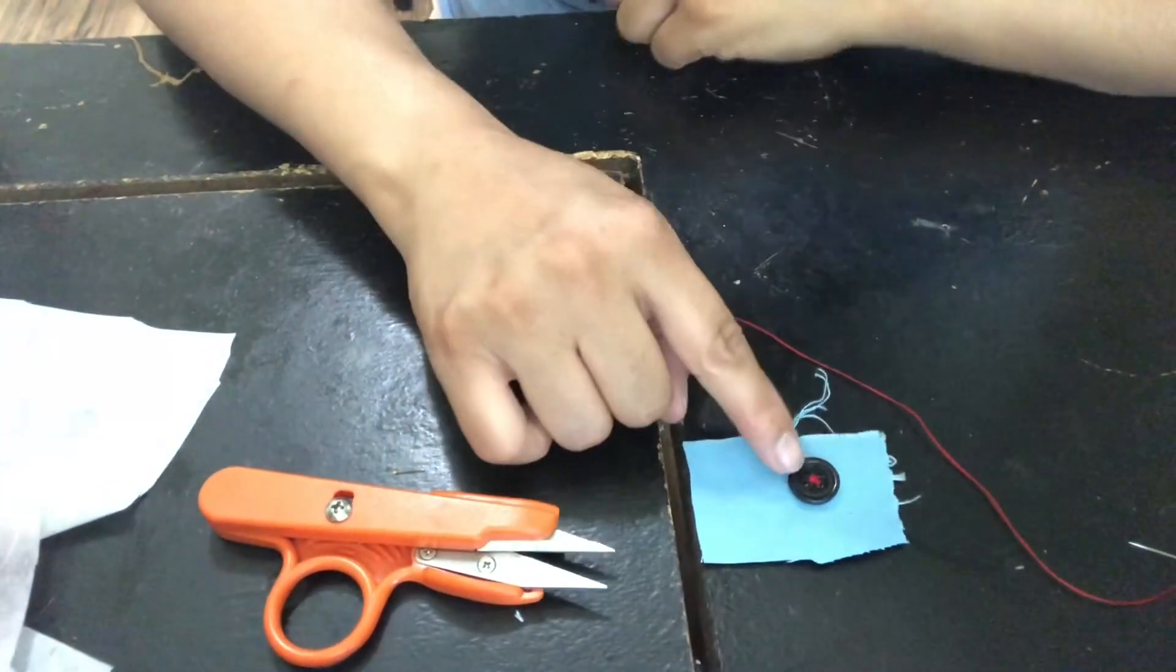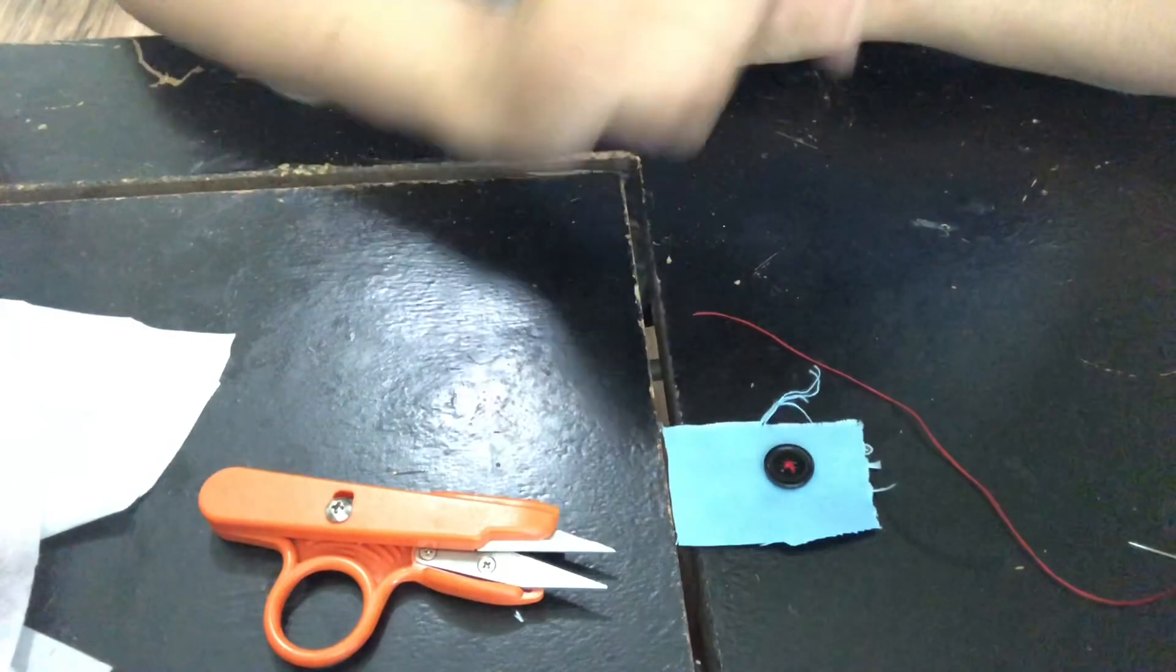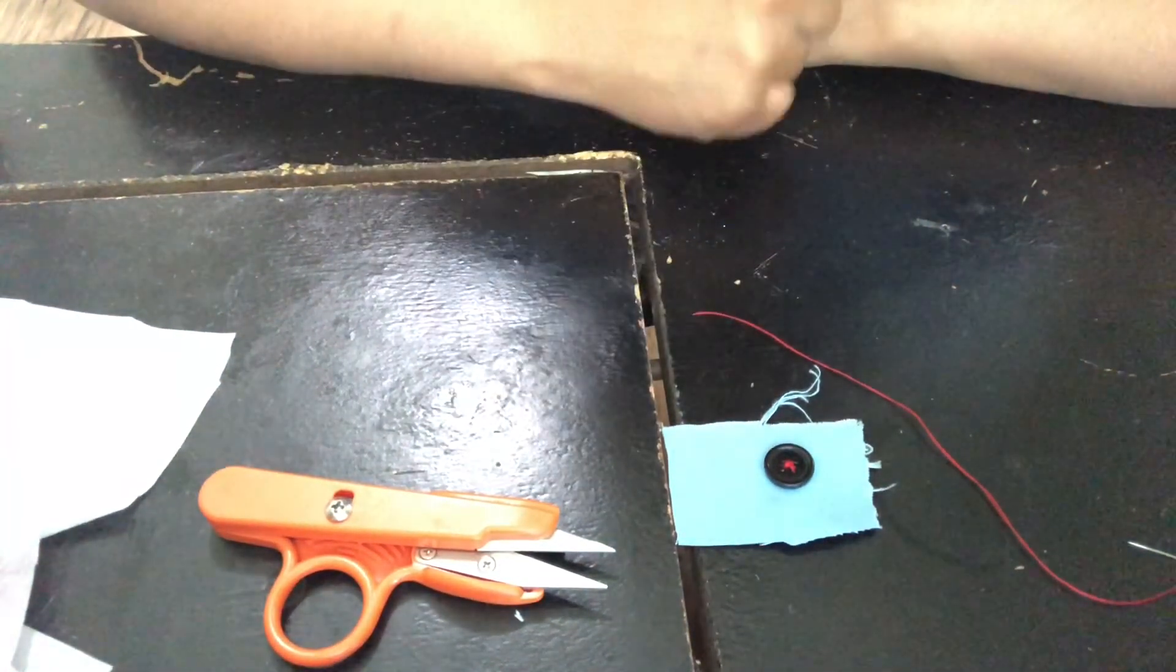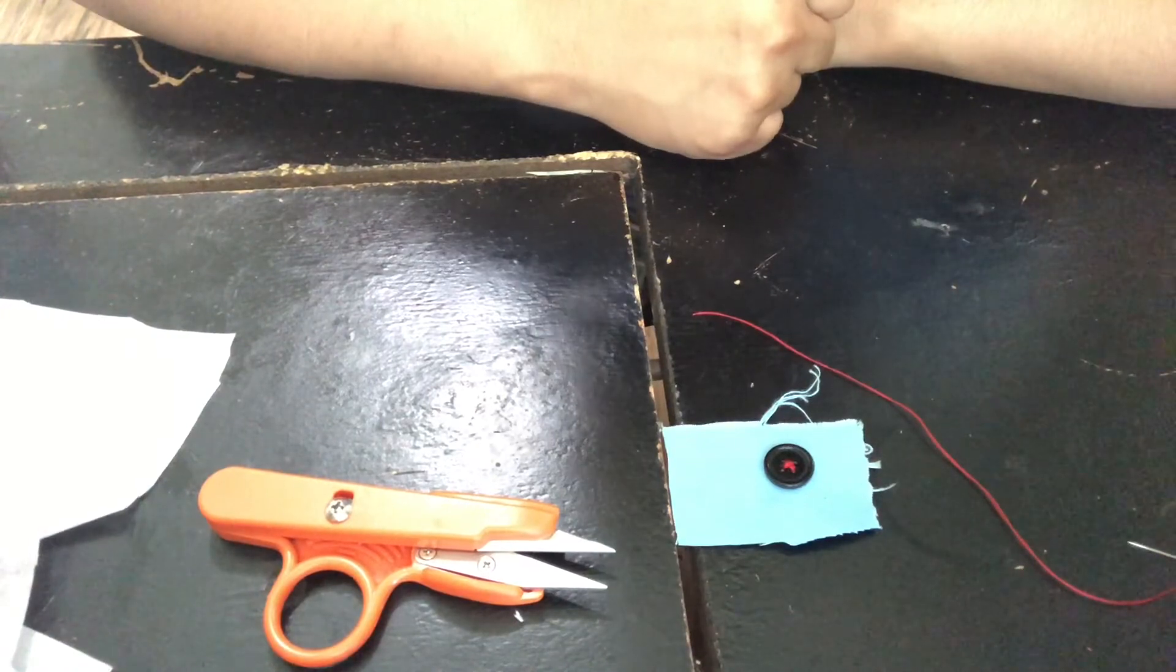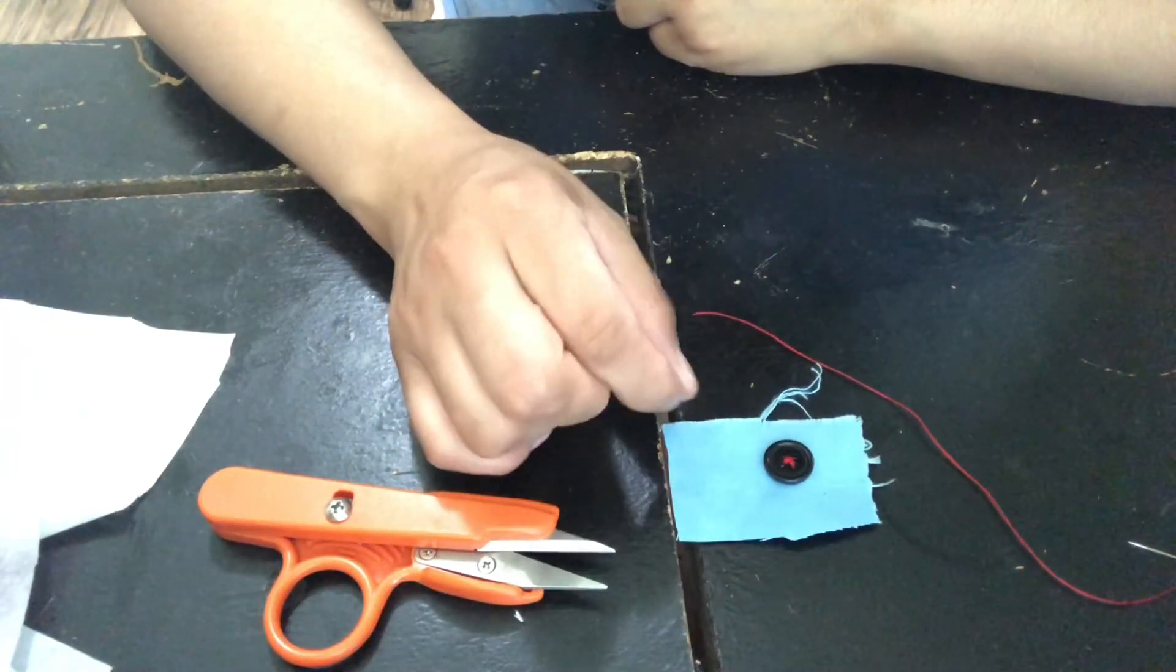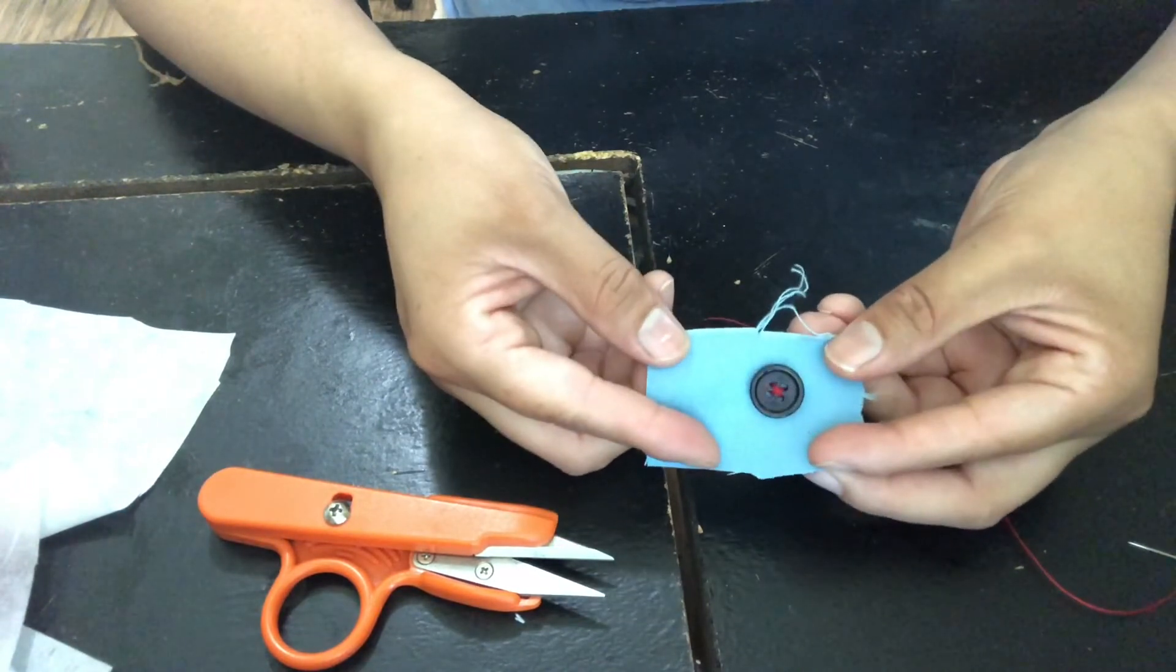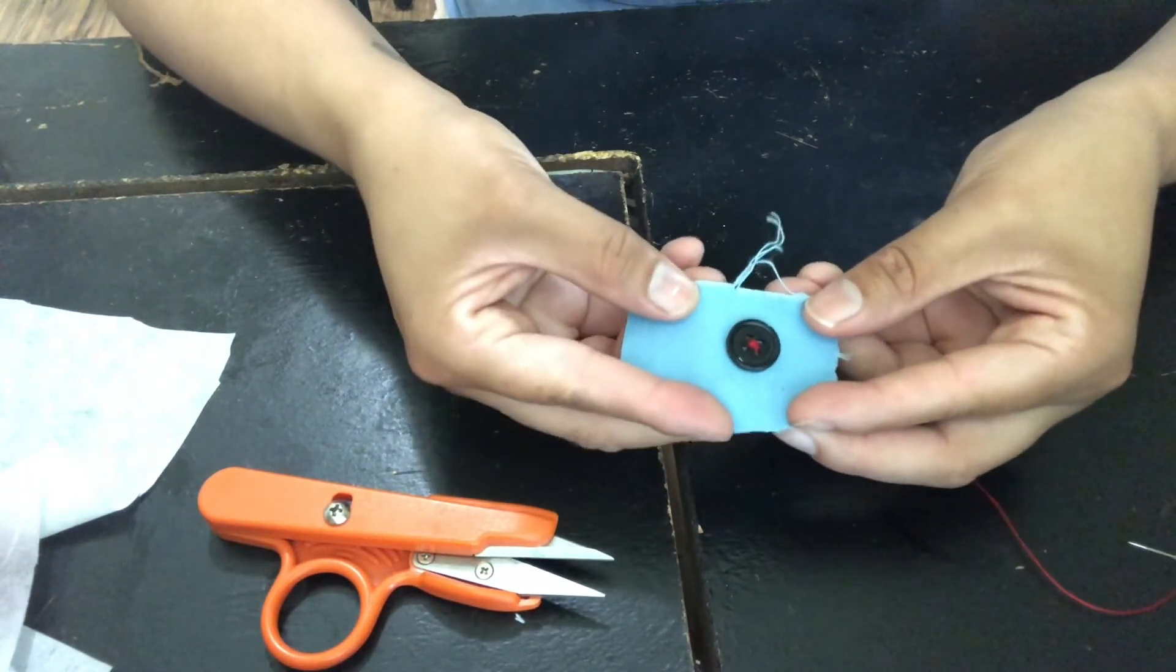This is for buttons that have four holes. There are buttons that only have two holes, and you can just do it as we did the first one and don't have to do the second part. There are also buttons that have hoops, but this is just for your general everyday button.